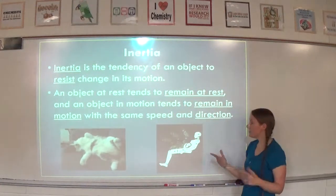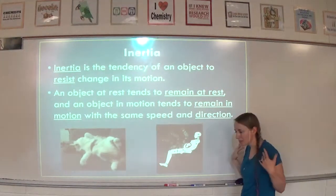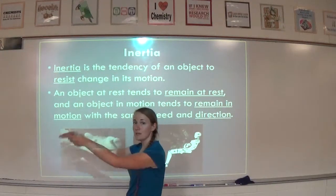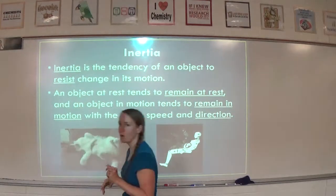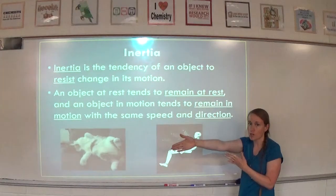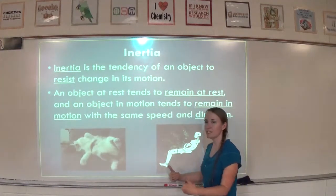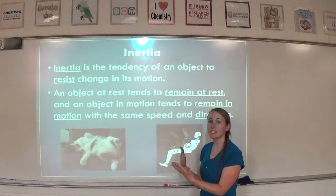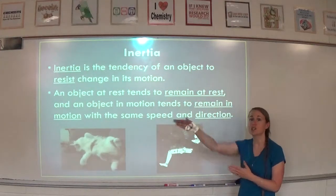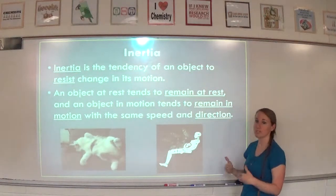An object in motion wants to stay in motion — this is the whole reason we have seatbelts. If you slam on brakes, your body, which is already moving in one direction, wants to keep going. That's why we wear seatbelts, so you don't hit your head on the steering wheel or worse, be ejected out of the car. If you're going 60 miles per hour, your body is already used to moving at 60 miles per hour. If you hit something, your body doesn't want to stop — that's why you get whiplash. The seatbelt forces your body to stop with the rest of the car.